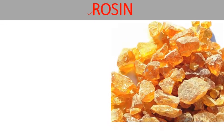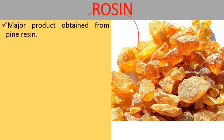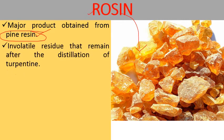Next are rosins. These are hard, resin-type substances commonly known as rosins. They are the major products obtained from pine resin. These are the non-volatile residues that remain after the distillation of turpentine, making them a non-volatile substance known as rosin.